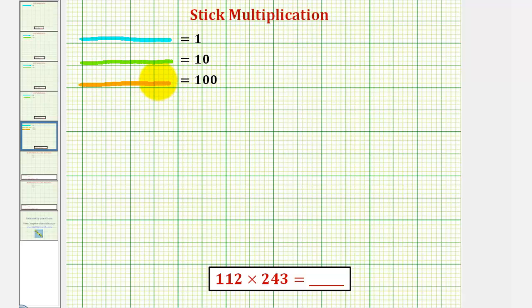To keep things organized, we'll use an orange stick to represent 100, a green stick to represent 10, and a blue stick to represent 1.